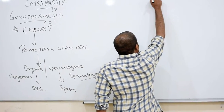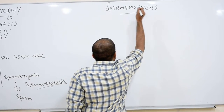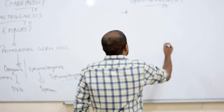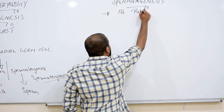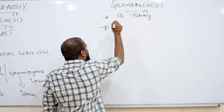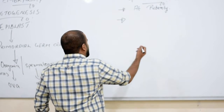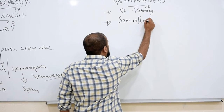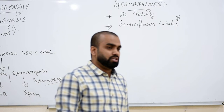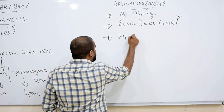Now let's talk about spermatogenesis — producing sperm. First, spermatogenesis occurs starting at puberty in a man. It takes place in the testis, specifically in the seminiferous tubules — this is a very important exam question. The duration of spermatogenesis is around 74 to 75 days.